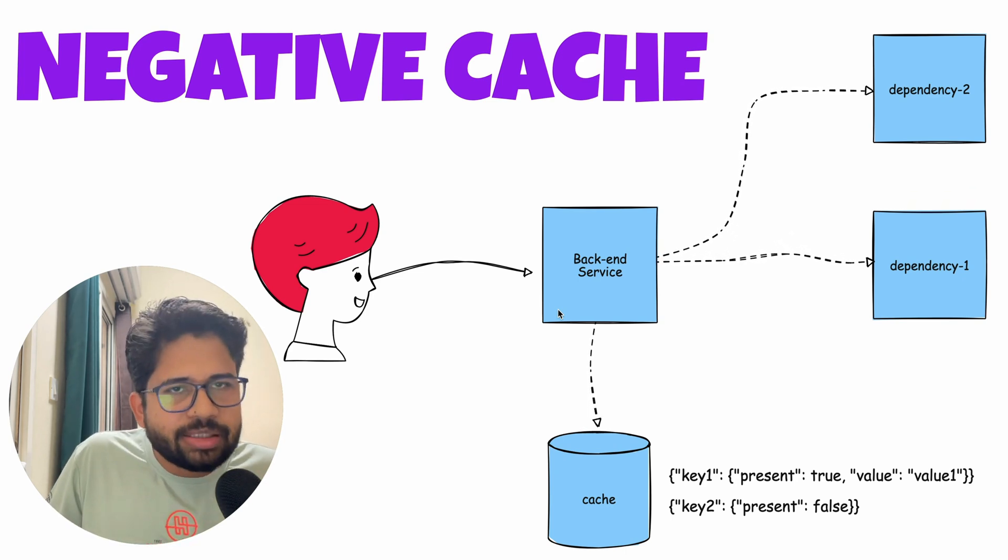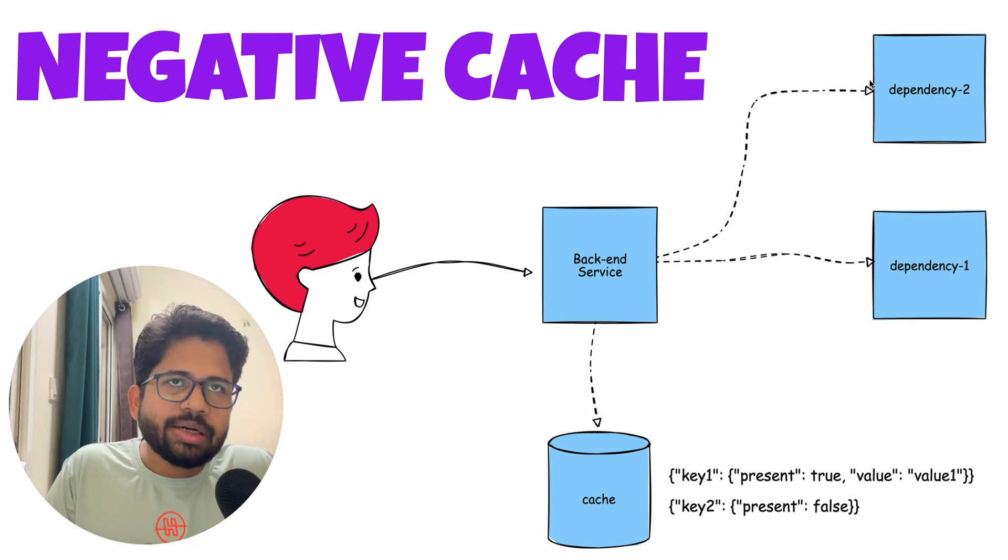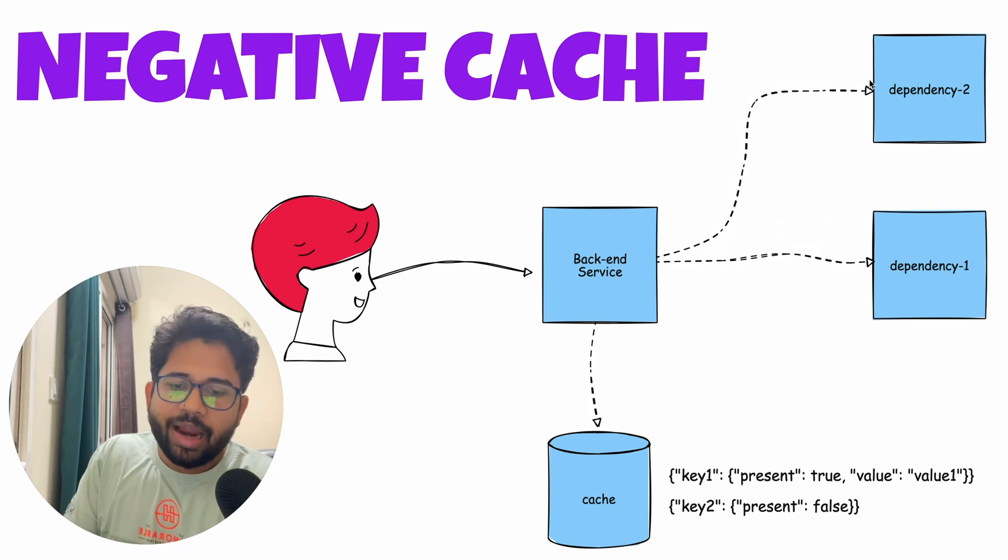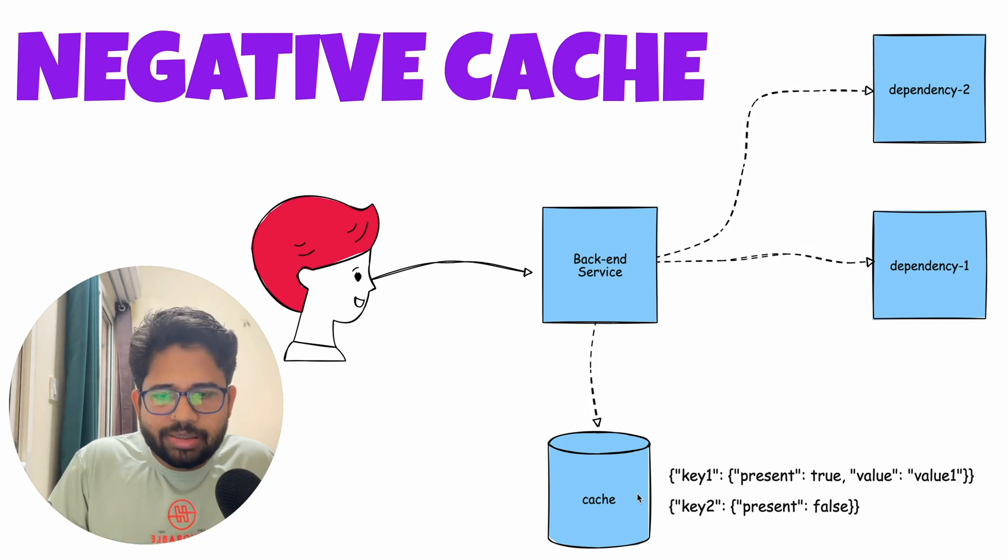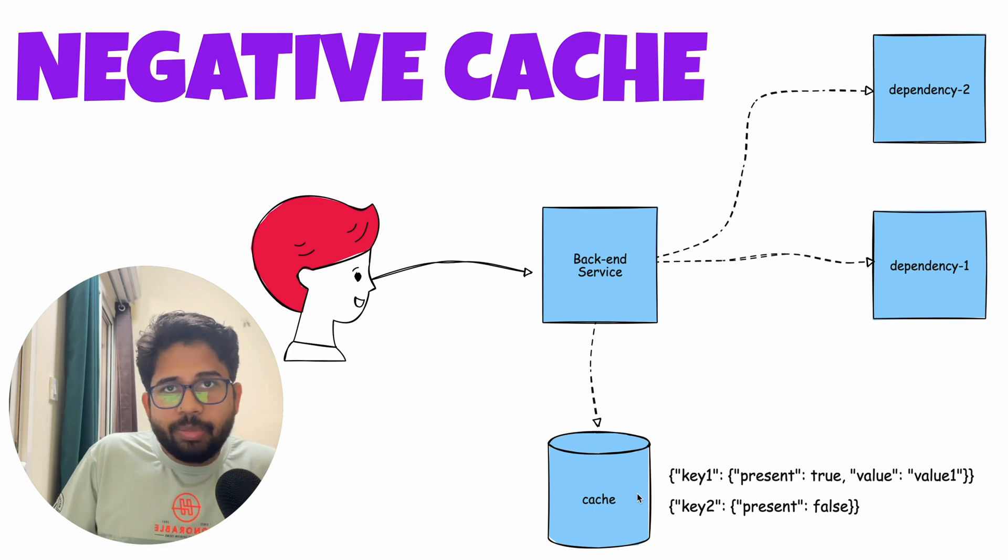So what this negative caching says is that you cache not just the positive response, you cache not just the days in which the flight is available, but you also cache the days on which flight is not available so that you can rely on this. And it looks very simple when I talk about it, but many times we don't consider the negative cache.